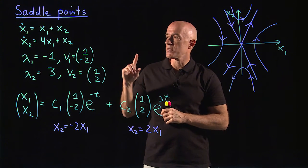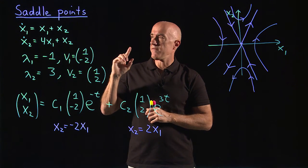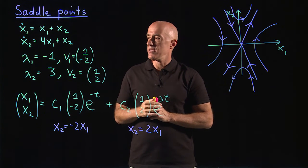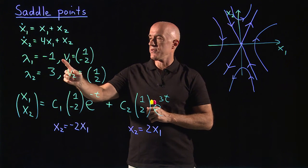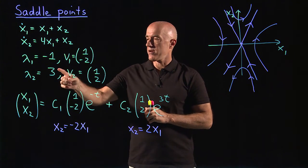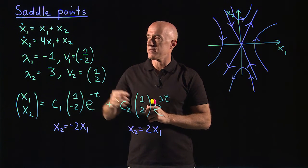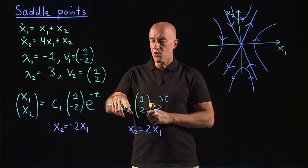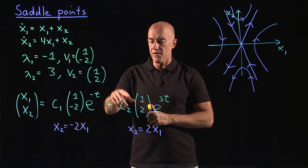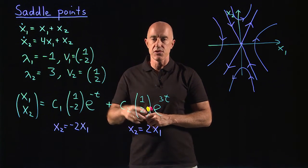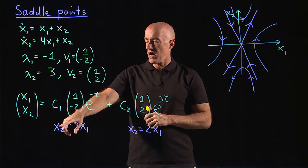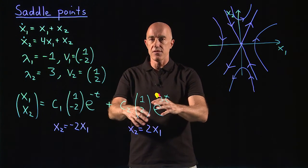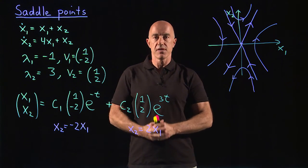So in this video, we talked about the phase portrait of a saddle point. The key here is that one of the eigenvalues is negative and one of the eigenvalues is positive. A saddle point is unstable because as long as you have a non-zero value of C2, the initial condition is not exactly on the line x2 equals minus 2x1, then eventually the solution will go to infinity.